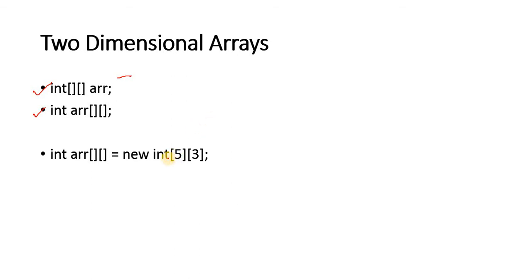If I want to allocate the size for the two dimensional array, I can allocate it in this way. It will say ARR is an array of type integers. The two square brackets denote that the array ARR is a two dimensional array, and I am allocating the size as five rows and three columns.